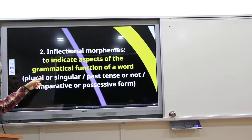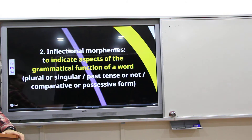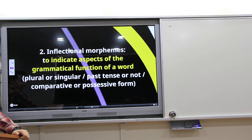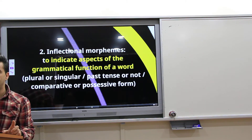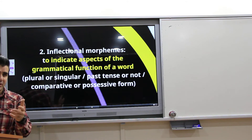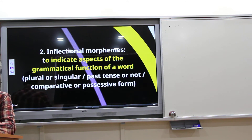For example, plural or possessive form. When you say 'book,' that's one book. When you say 'books,' it is two or three books — but it still has the meaning of 'book.'